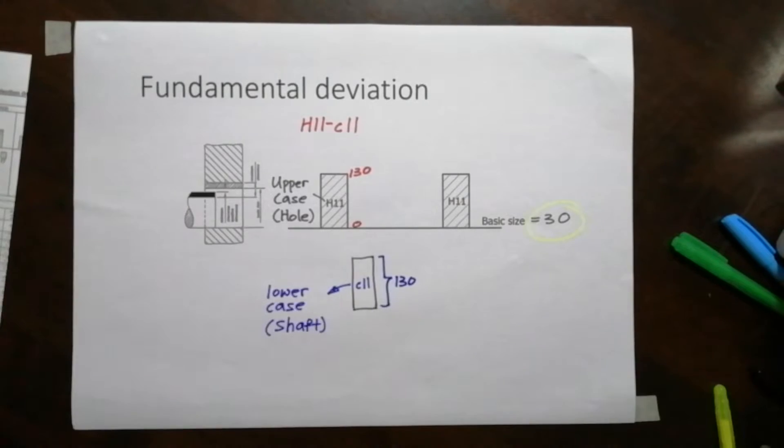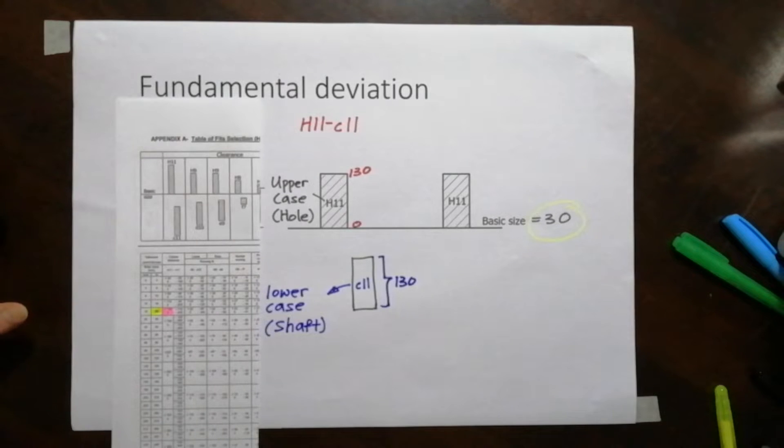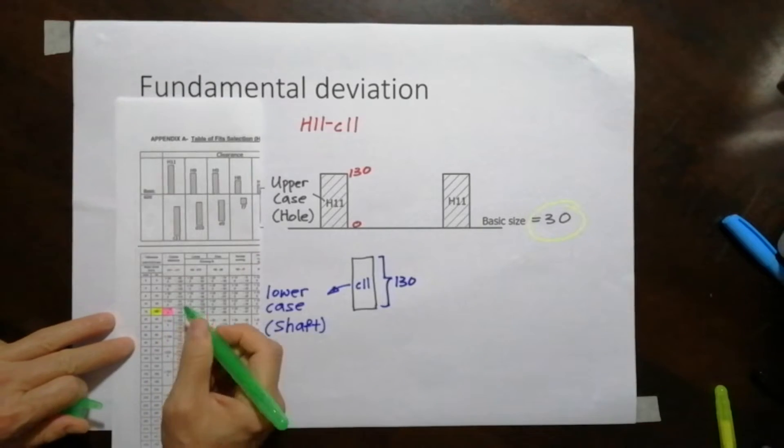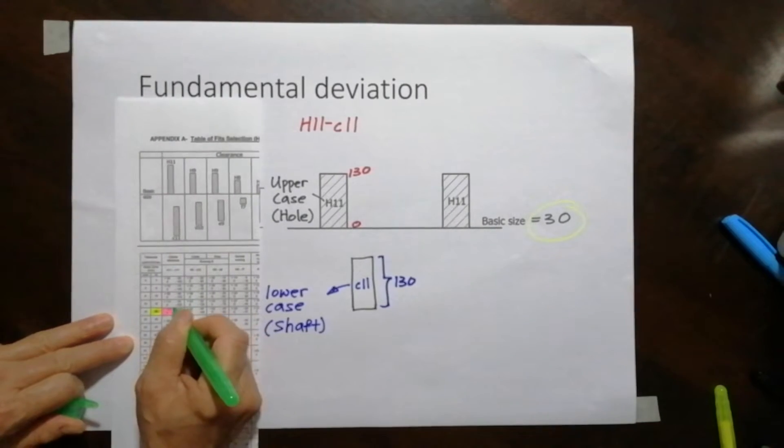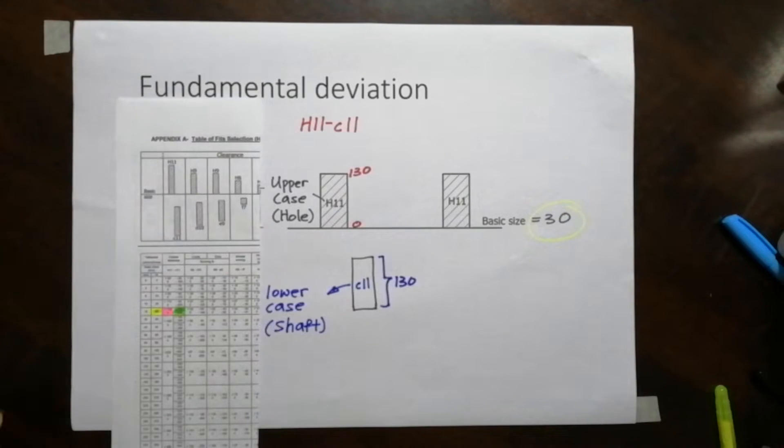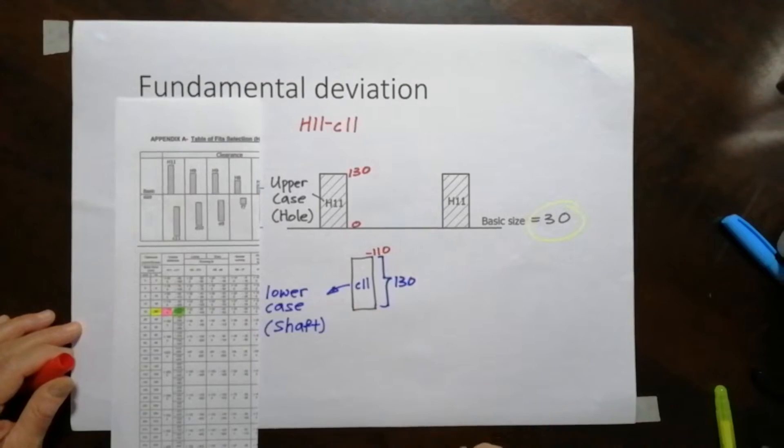Look at C. You see that it is minus 110. So it's below here. Here it is minus 110 and the other one is minus 240.